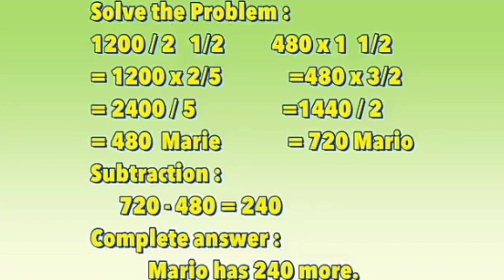To solve the problem, we are going to divide 1200 by two and a half. We change the mixed number into an improper fraction: 2 times 2 equals 4, plus 1 equals 5, so that gives us 5/2. We apply the reciprocal method: 1200 times the reciprocal of 5/2, which is 2/5. Then multiply: 1200 times 2 equals 2400, divided by 5, we get 480 — the share of Marie.